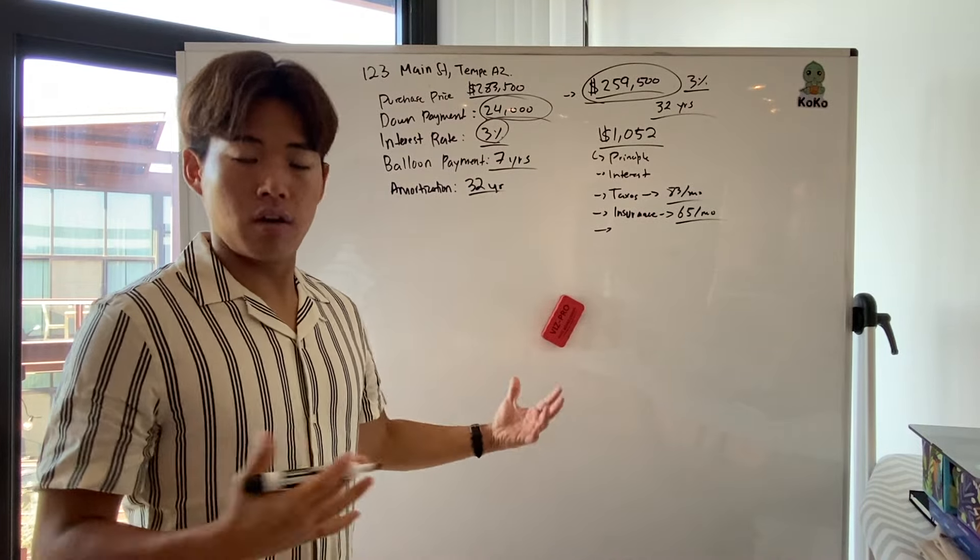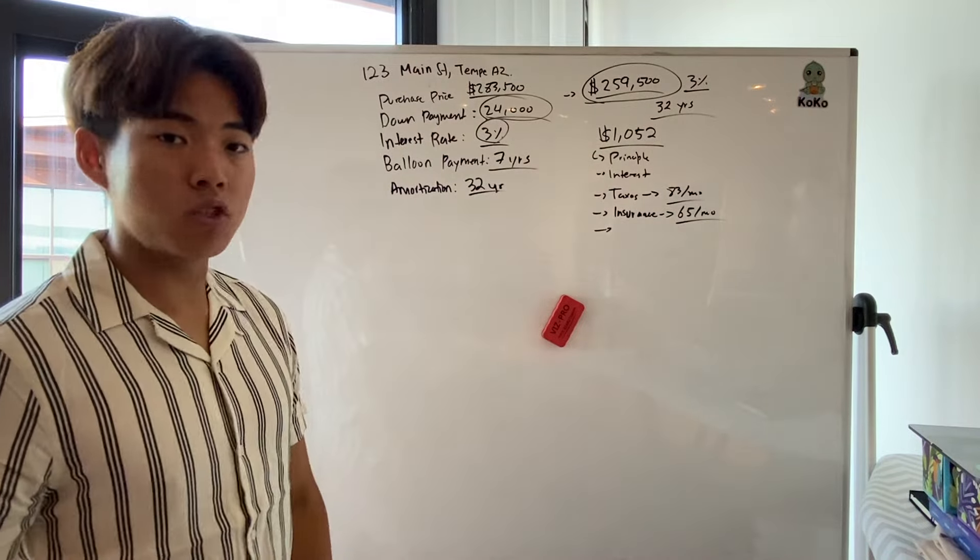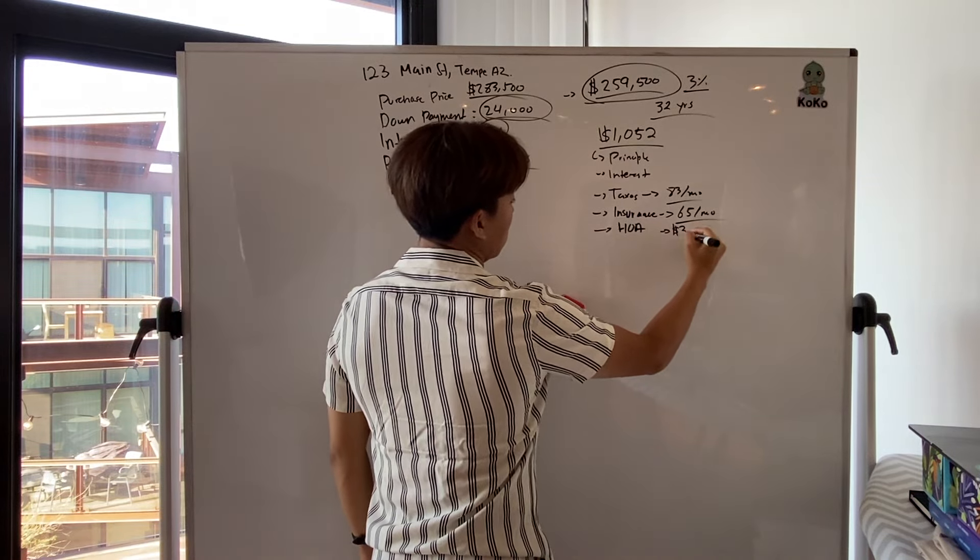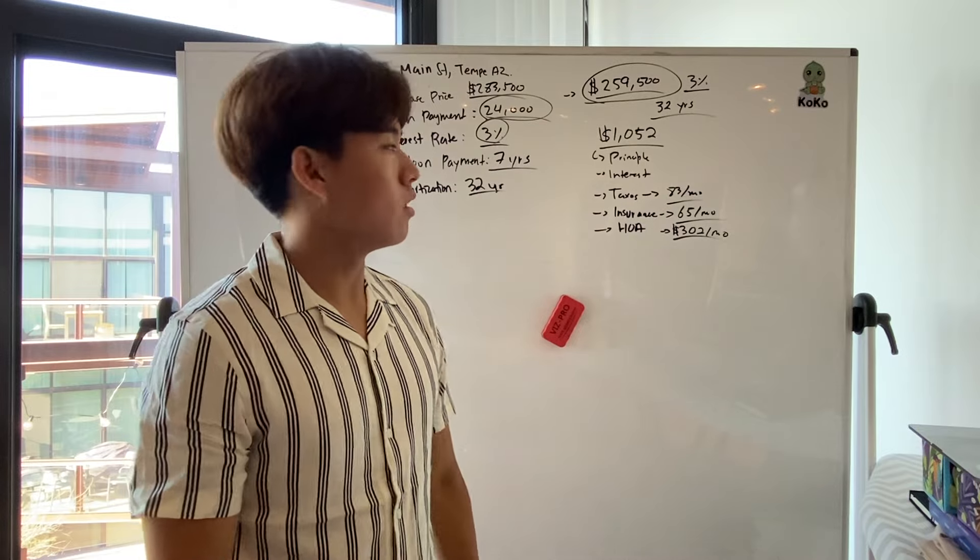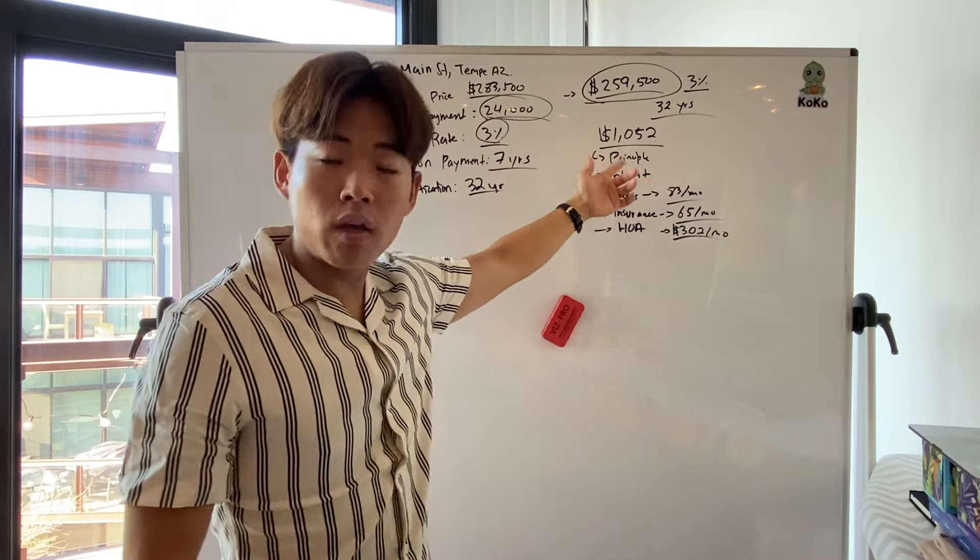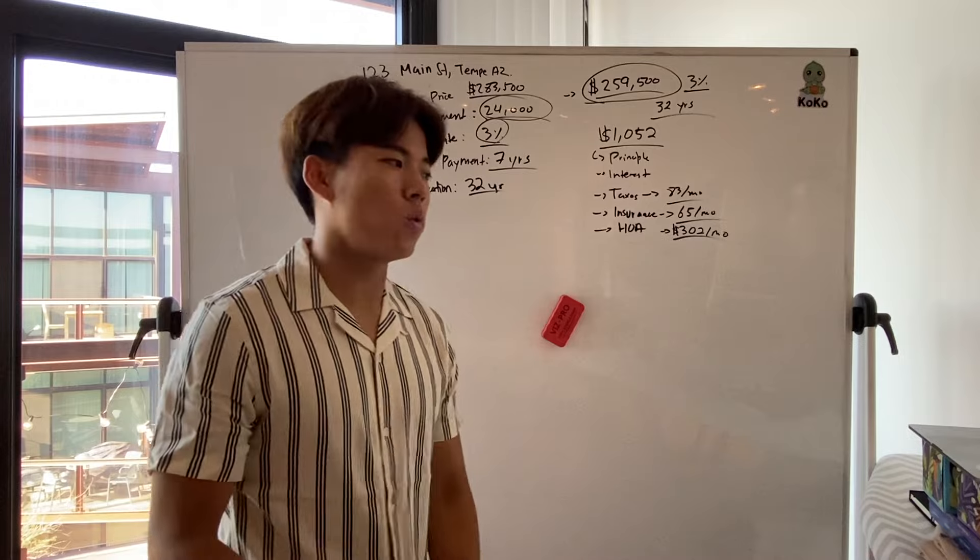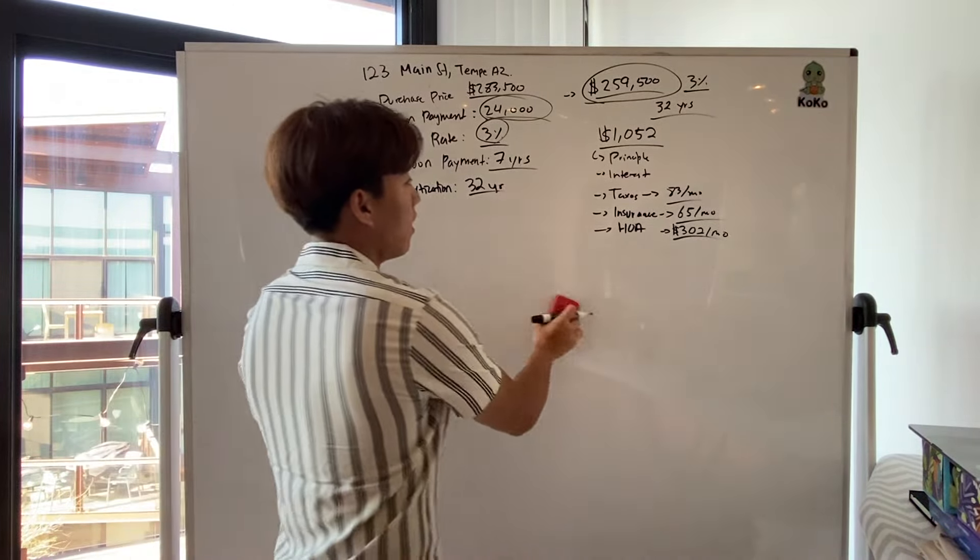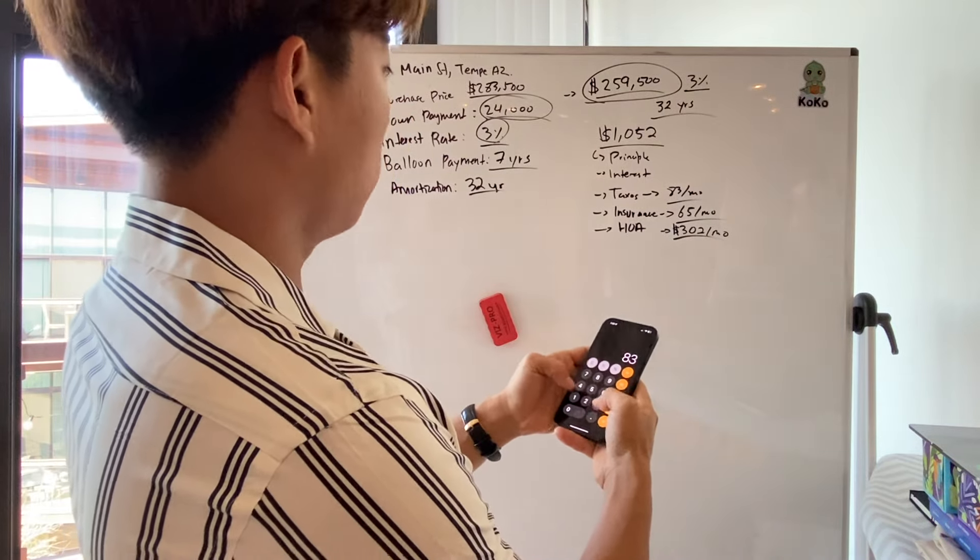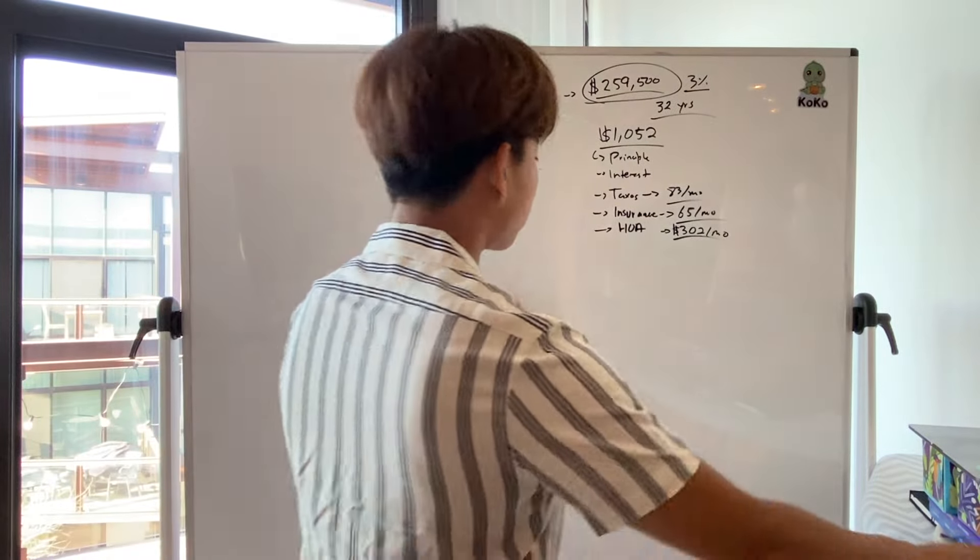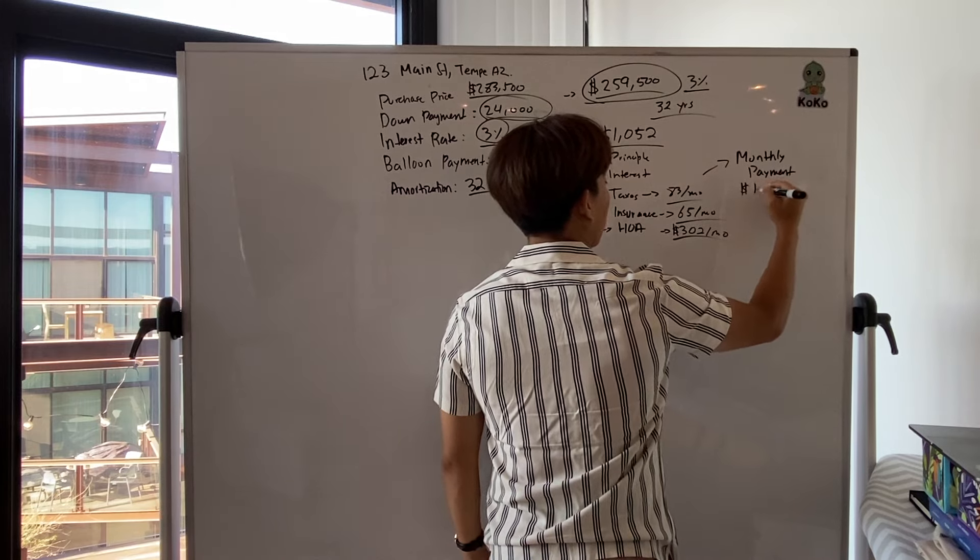But because this is a condo, there's an HOA fee. And I can tell you right now, I don't like buying condos, but this is a 3% interest rate. So I committed to buying. The HOA on this house is $302. That's literally like 30% of your mortgage payments. It's insane. Like my mortgage is $1,050 and my HOA is $302. What can you say about HOA? You know, I'm not a big fan of HOA, but that's a conversation for another day. So every single month, let's just do the math. $1,052 plus $83 plus $65 plus $302 comes out to be $1,502. Monthly payment comes out to be $1,502.